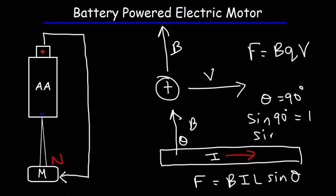If the angle is 0, sine 0 is equal to 0. So that tells us that if the magnetic field is parallel to the current, the force, the magnetic force acting on the current, or on the conductor, where the moving charges are, will be equal to 0.